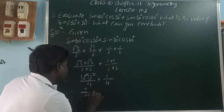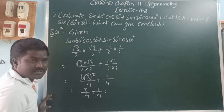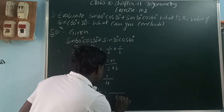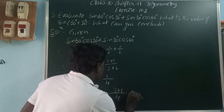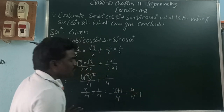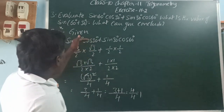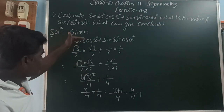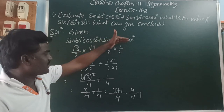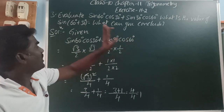That gives 3 by 4 plus 1 by 4. These two are like fractions, so we add them with the common denominator: 3 plus 1 is 4 by 4. So the value of sin60·cos30 + sin30·cos60 is 1.